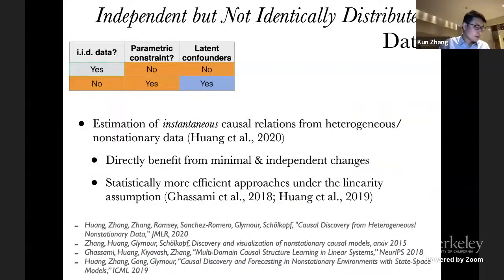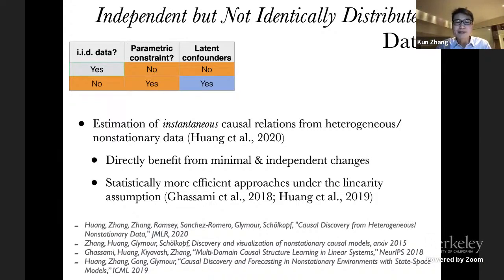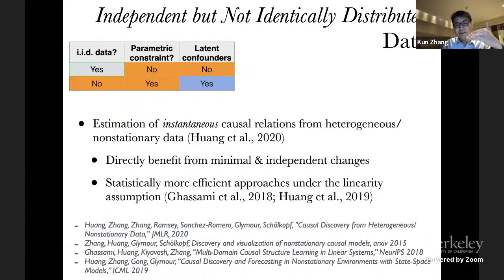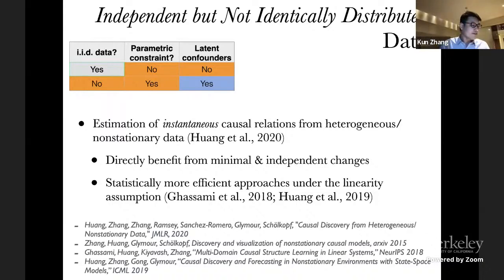Now let's go further. Previously we had time-delayed causal relations; now suppose we have instantaneous causal relations and independent but not identically distributed data. This means you may have multi-domain data where within each domain the data is IID, but the distribution can differ across domains. Or you can have time series data where samples are independent over time but the distribution changes over time. In this case we need to estimate the instantaneous causal relations from such data.